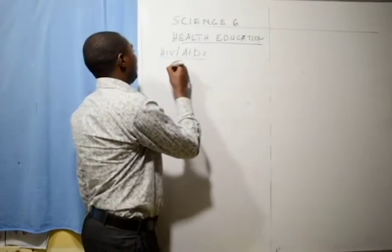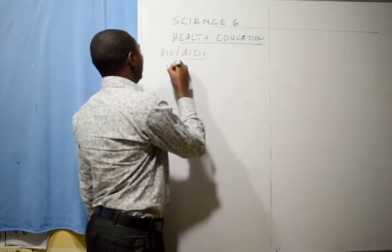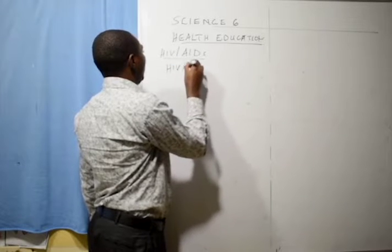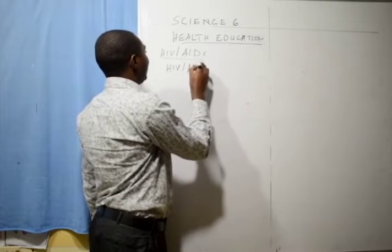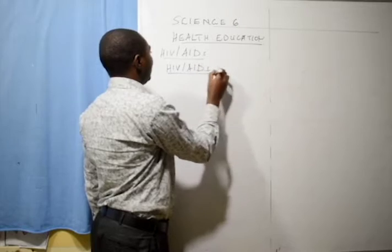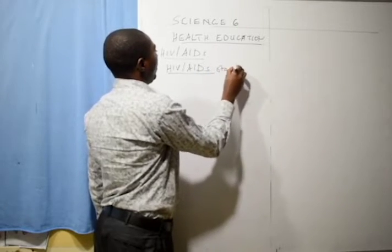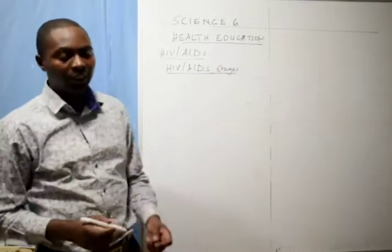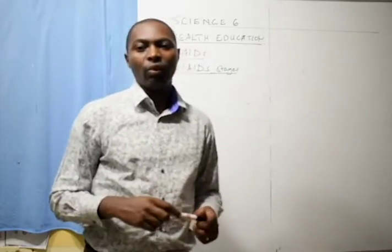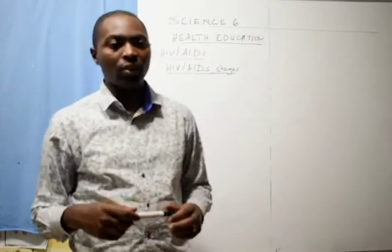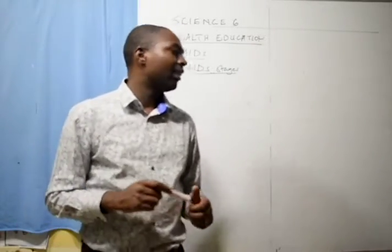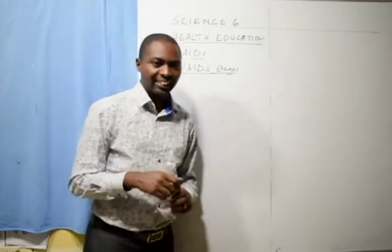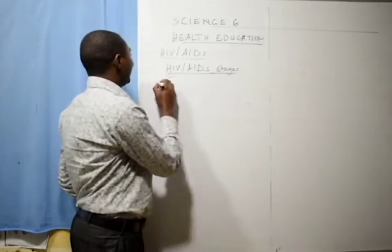I want to start with what we call HIV/AIDS stages. We have four stages. HIV is a virus, and once it gets into the human body, it destroys very important cells known as the white blood cells.